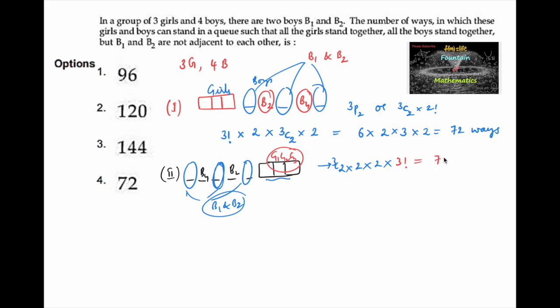So we can write again 72 ways. So total from both cases we can say 144 ways. So 144 is the answer which is option C.